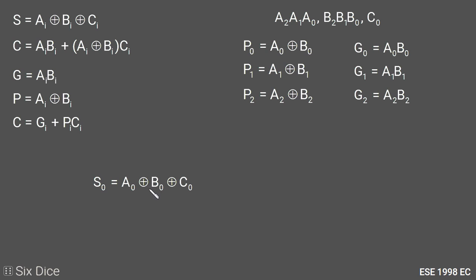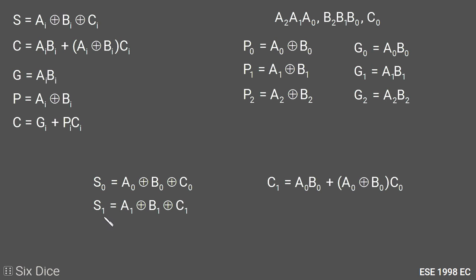We can now write the LSB sum: S0 = A0 XOR B0 XOR C0. The first carry is: C1 = (A0 AND B0) + ((A0 XOR B0) AND C0). Using C1, S1 = A1 XOR B1 XOR C1. If we substitute C1's value into this equation, we can see that S1 depends only on A1, B1, A0, B0, and C0 — values we already have at the start.